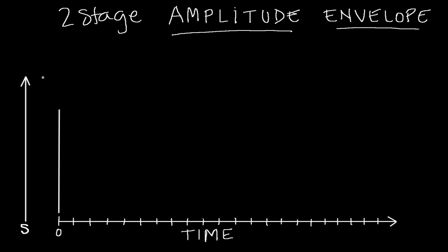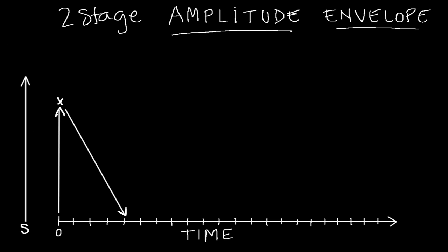When you hit a snare, it rises up to its loudest peak almost instantly — in just a thousandth or a couple of thousandths of a second — so our attack angle is almost vertical. In a dead-end room, the decay is like so: we hit the snare, and it's taken about four tenths of a second — just under half a second — to decay to silence.